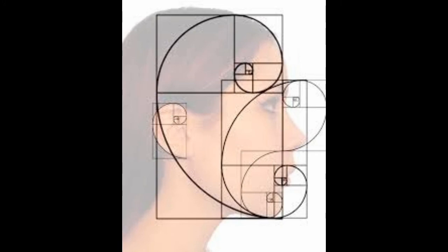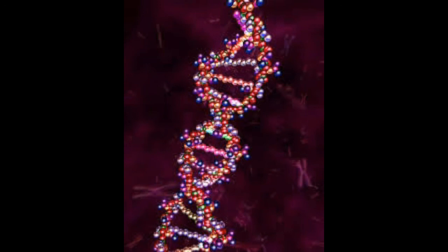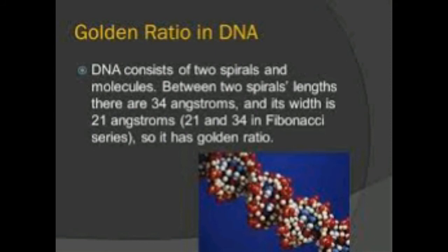Next, in our DNA structure also, it follows the fibonacci sequence. That is, in our DNA structure, we will get 34 by 21. And when dividing that, you will get the phi value. So, this also, it forms a fibonacci sequence.